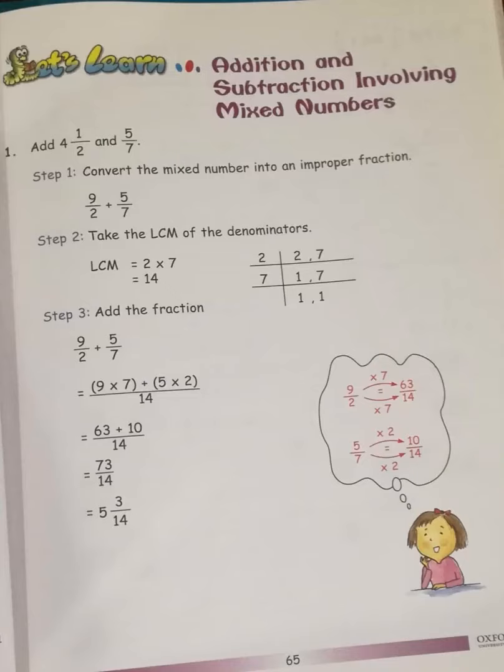It's page number 65. Look at this: Addition and Subtraction Involving Mixed Numbers. We are talking about mixed numbers, which is a fraction shown on the side of a whole number like this. You can see the question: Add 4 1/2 and 5/7. This one with the whole number written separately is called a mixed number.